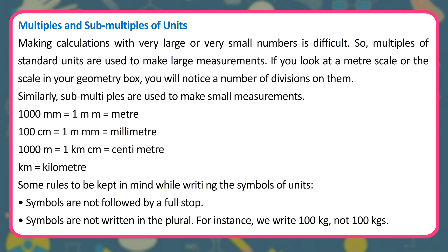Multiples and submultiples of units. Making calculations with very large or very small numbers is difficult. So, multiples of standard units are used to make large measurements. Similarly, submultiples are used to make small measurements. For example: 1,000 millimeters equals 1 meter; 100 centimeters equals 1 meter; 1,000 meters equals 1 kilometer. Some rules to keep in mind while writing the symbols of units: symbols are not followed by a full stop; symbols are not written in the plural — for instance, we write 100 kg, not 100 kgs.